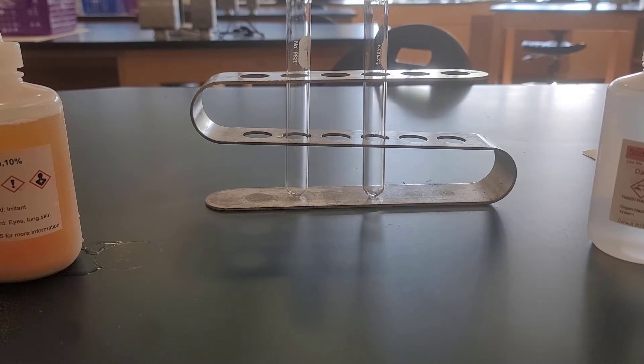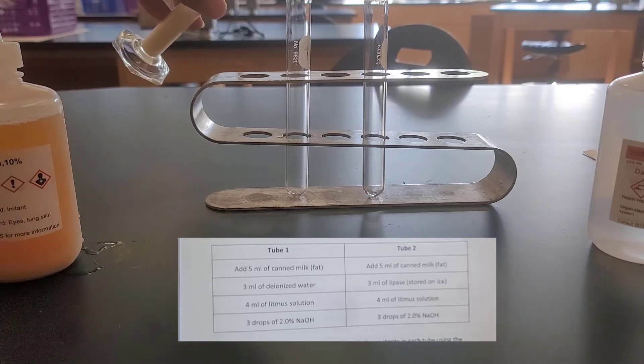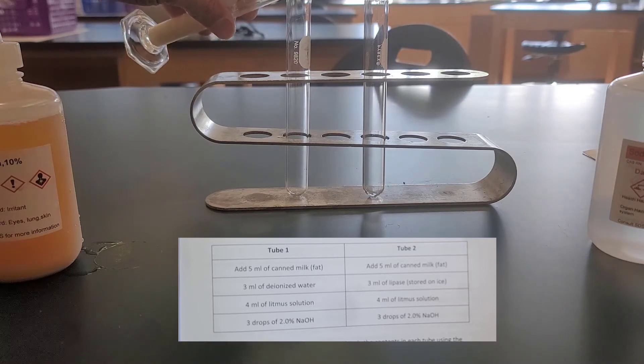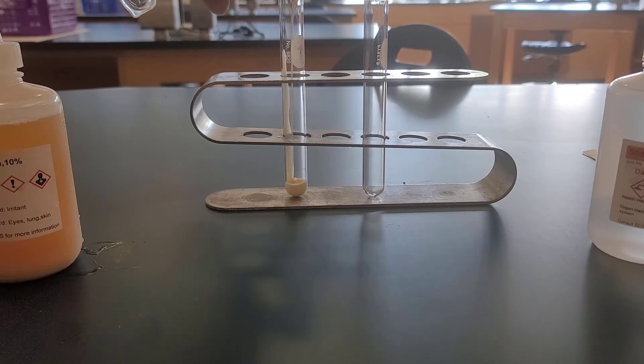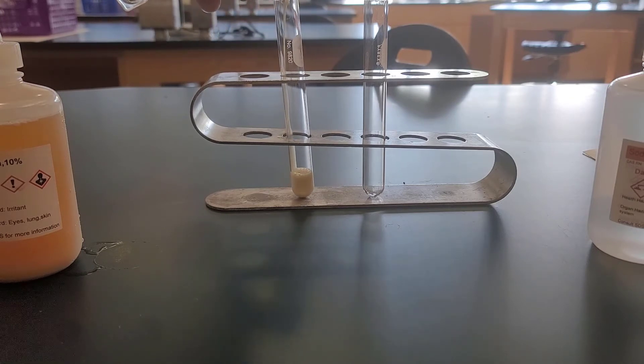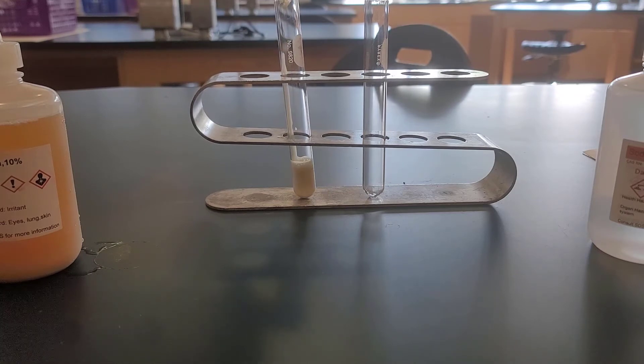So to set this one up, we're going to have two test tubes: test tube one and test tube two. In test tube one, we're going to have five milliliters of canned milk, and that's going to be the source of our fat. We're going to use three milliliters of deionized water in that test tube number one, four milliliters of litmus solution, and three drops of two percent sodium hydroxide NaOH.